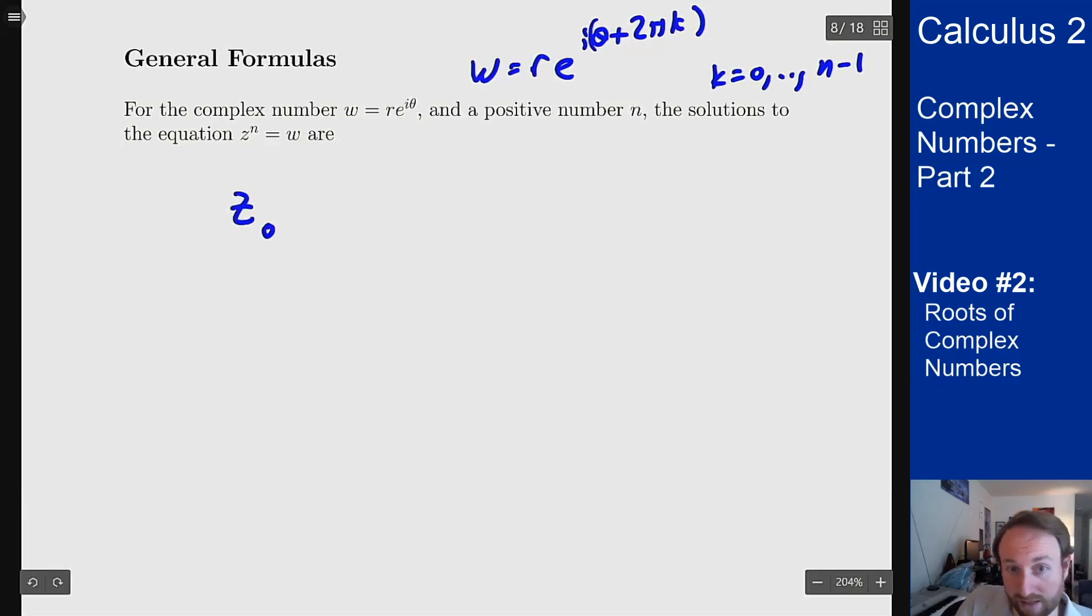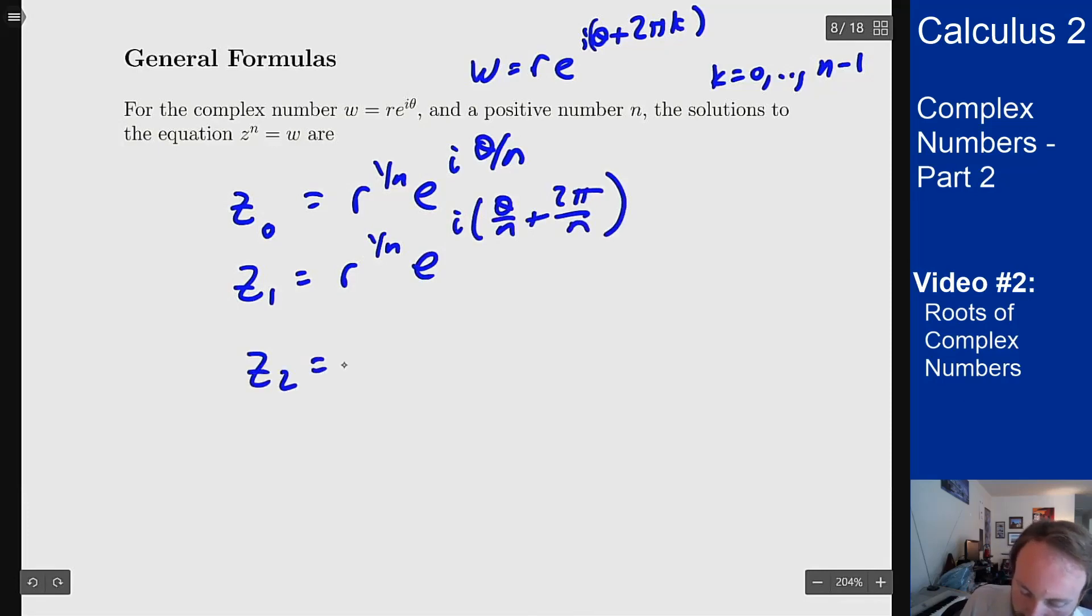z0, I'll call it z zero because k equals 0, as r to the 1 over n e to the i theta over n. I'll get z1 which is r to the 1 over n e to the i theta over n plus 2 pi over n.